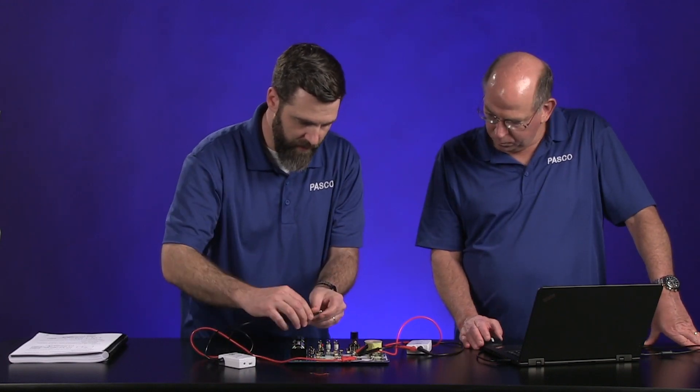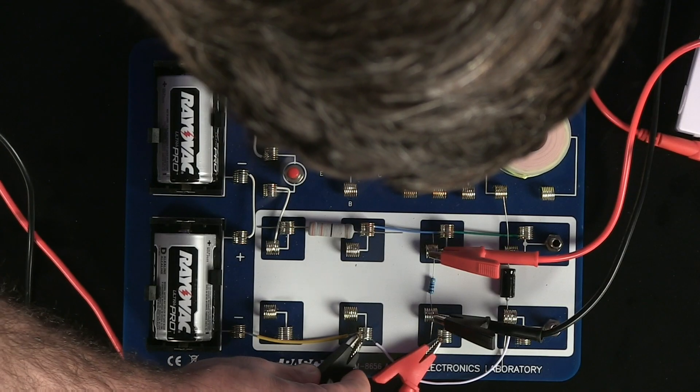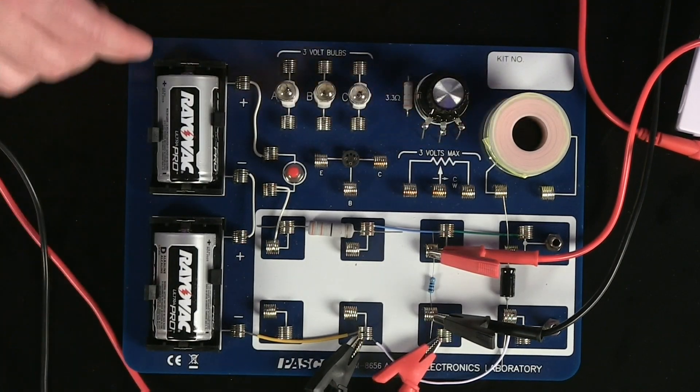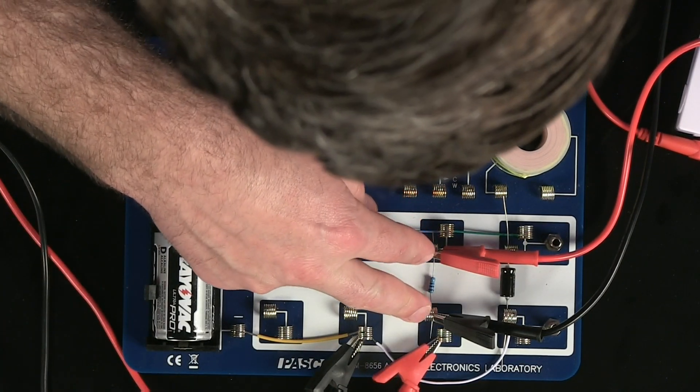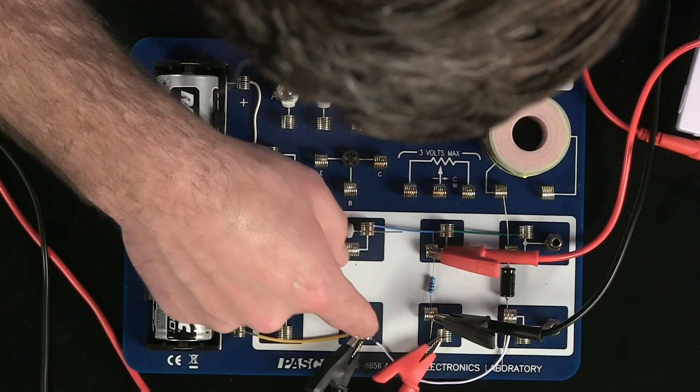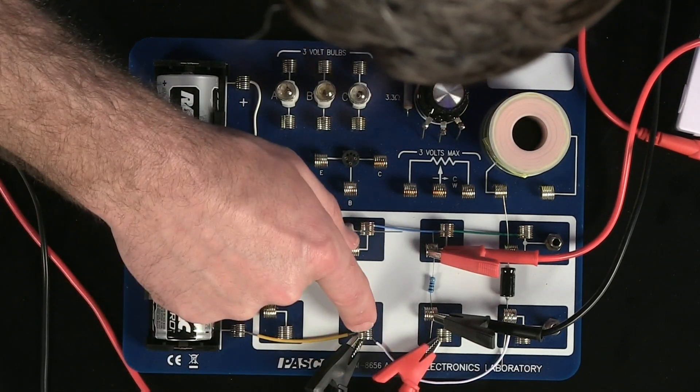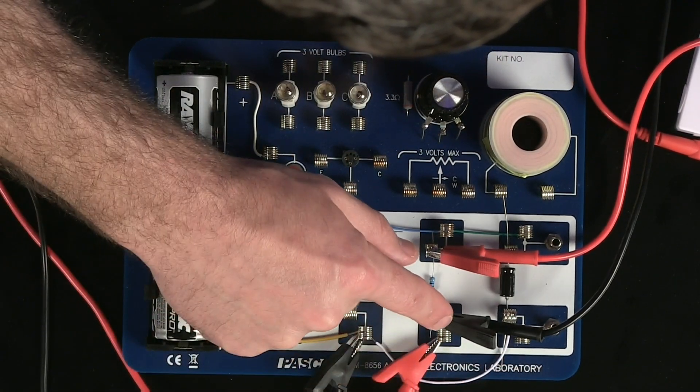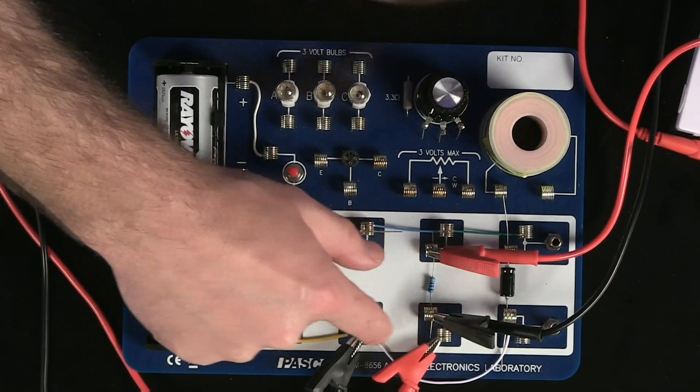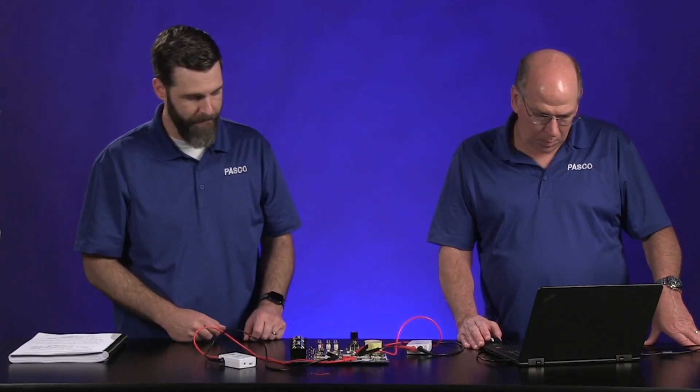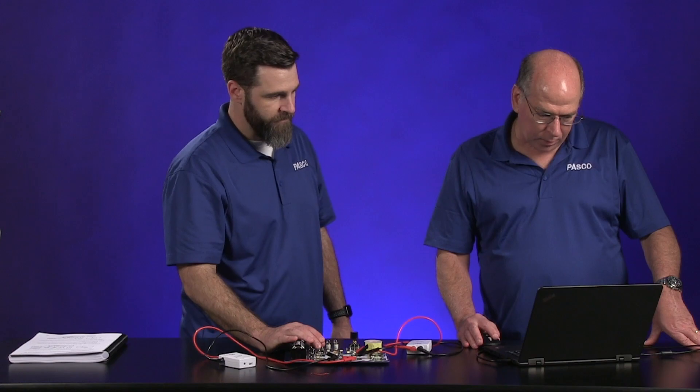So I'm going to take this and put it here. So now we're measuring voltage across this resistor and then also the current through it before it meets back up at this junction here. So right here is where we're measuring current. So let's see what that looks like. You ready? Yep.